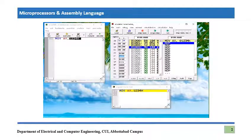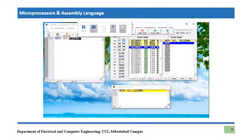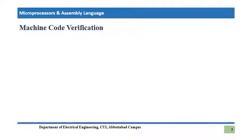Whatever change has occurred is shown in blue color. This is also in blue — it is the new content of the accumulator register, AX, because the value 1234 has been moved into it. I hope this is clear up to this point.